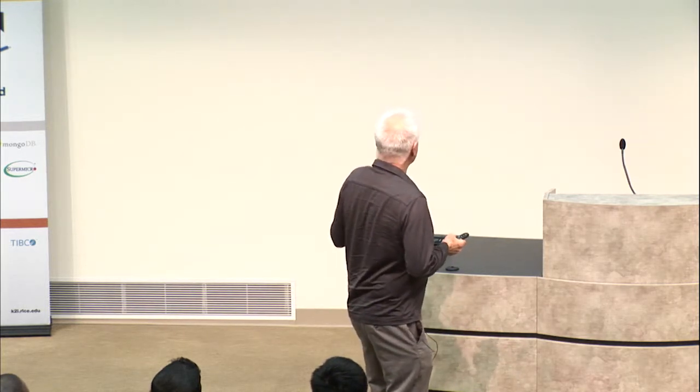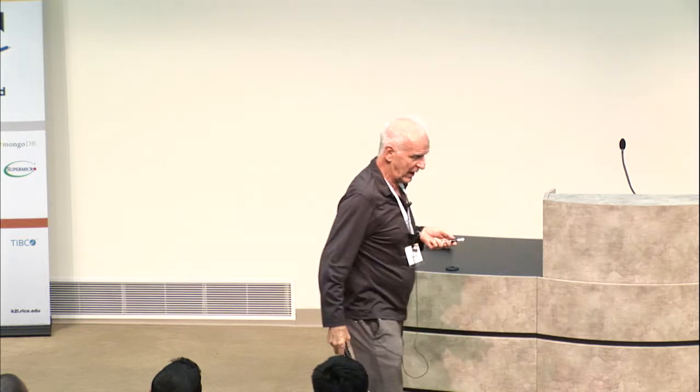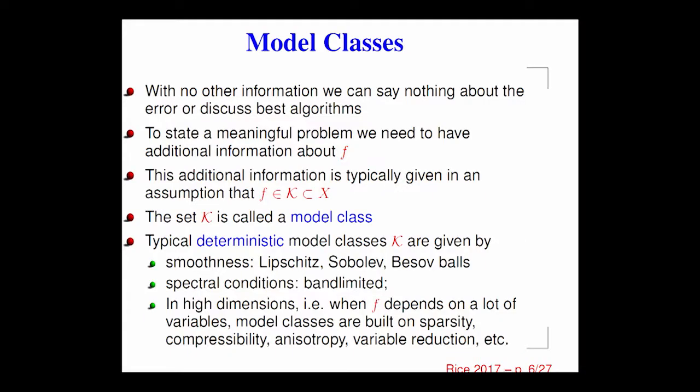The information you give me about f, we put into what we call a model class. I'm in a deterministic setting here — you're perhaps familiar with the stochastic setting, which is more closely aligned with statistical learning. This model class is what I know about f. The typical deterministic model classes are built on some knowledge about f having some smoothness: maybe f came from a solution to a differential equation, or maybe it's a signal and you know something about its spectral content.